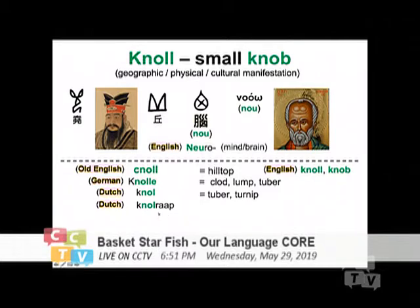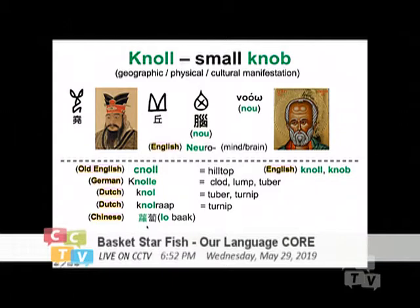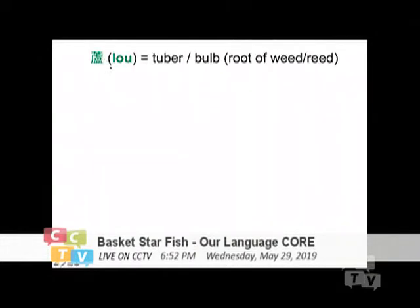This is 'no' in German — it becomes the clot, a lump or tuber. And then Dutch will be 'no' and become a tuber, a turnip. You see it from the hilltop, from a human head, all the way to a vegetable. The common thing is that they are all just a lump. The Dutch will also have 'no-wrap' as a real turnip. And then look at that — the Chinese actually have this 'law,' but you have to pay attention because I chase all the words only by sound. When I look this up in Chinese, 'law' means both turnip or radish.